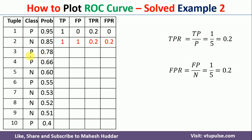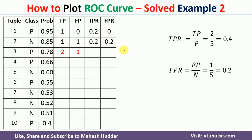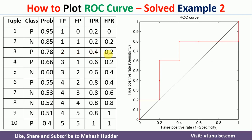Taking the third example: the probability is 0.78, so we consider this as the threshold. The first three examples are now classified as positive, and the remaining are negative. The new example has actual class positive and calculated class positive — it is a true positive. So true positive becomes 2 and false positive remains 1. TPR equals 2/5 = 0.4 and FPR equals 1/5 = 0.2.